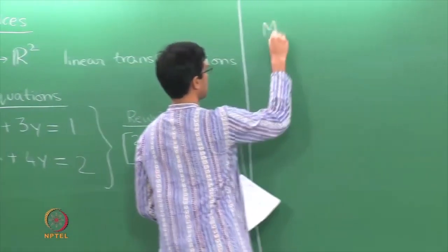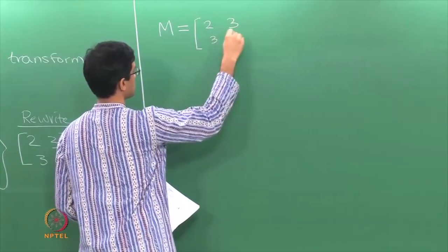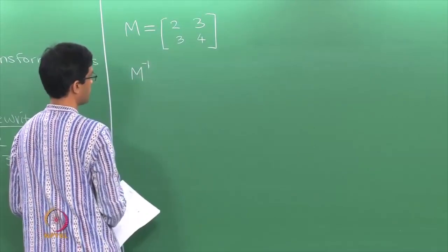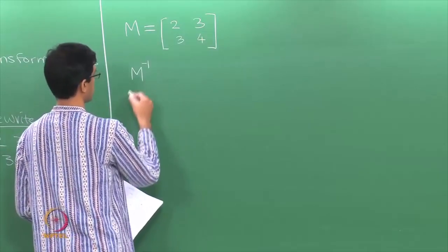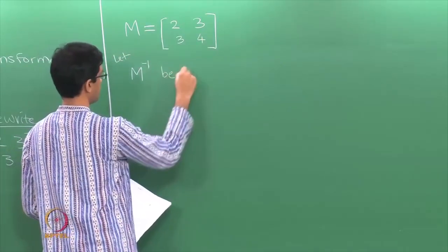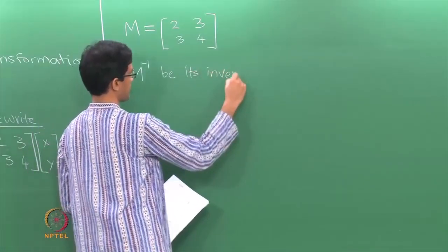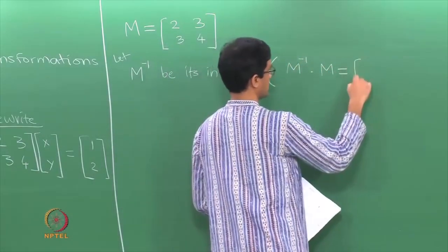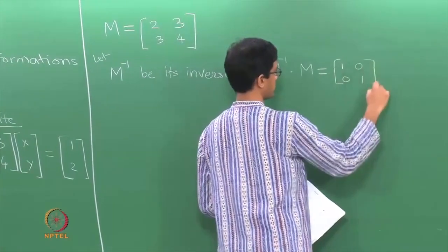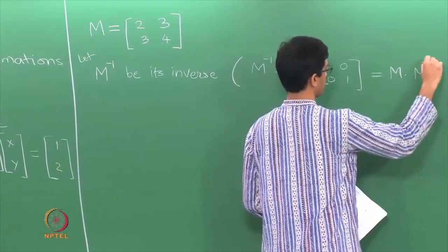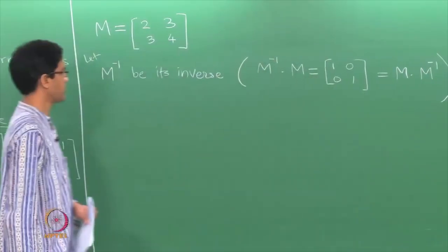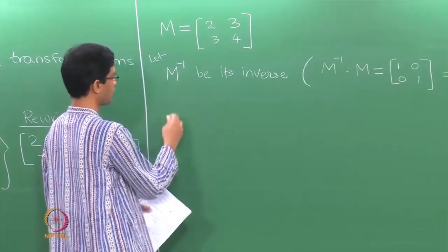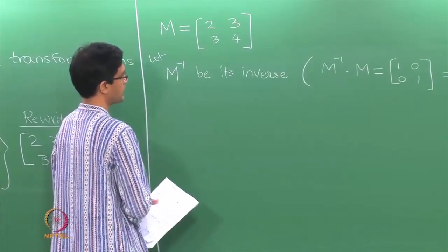What does the inverse mean? If you have the matrix of coefficients 2, 3, 3, 4 — the inverse matrix is the matrix which when multiplied with M gives you the identity matrix. Let M inverse be its inverse: M times M inverse equals the 2×2 identity matrix, and it is immaterial which order you multiply — M·M⁻¹ or M⁻¹·M both give the identity matrix.